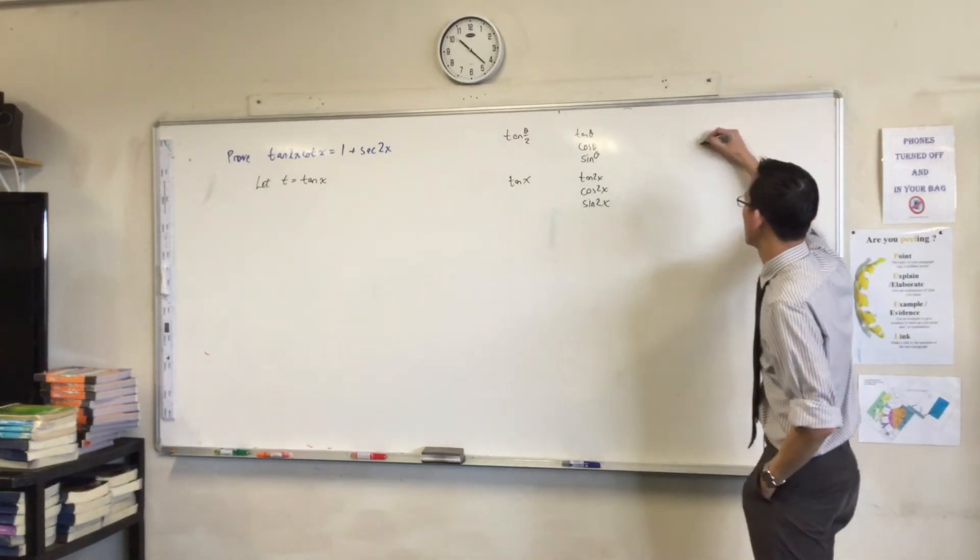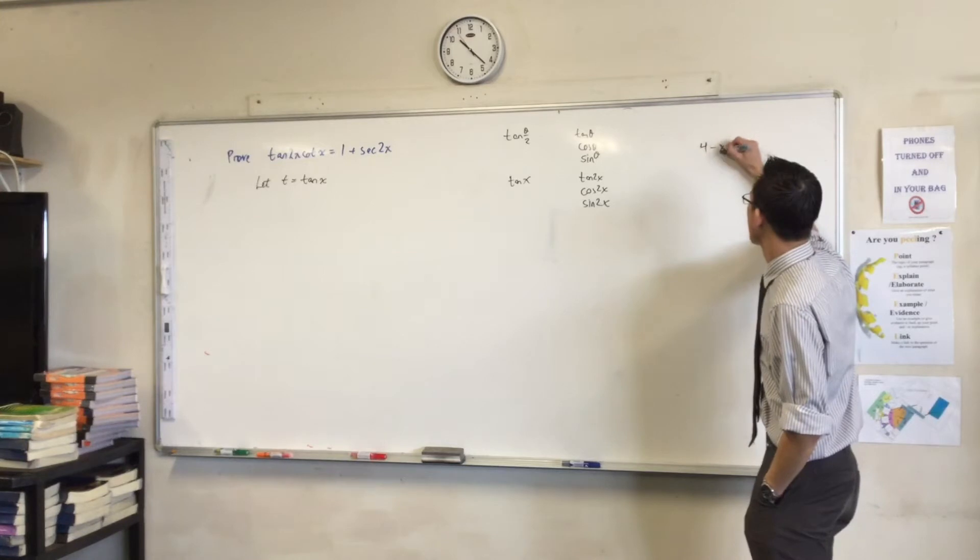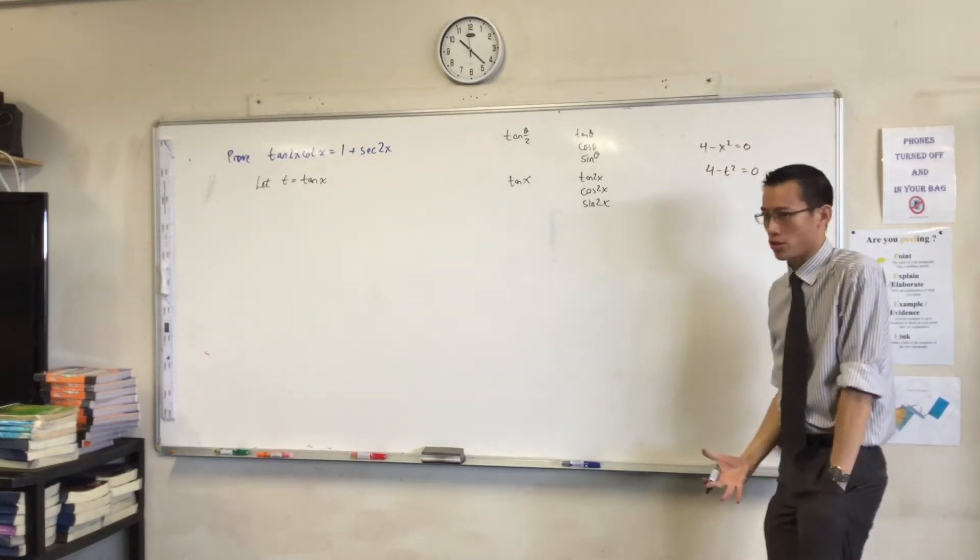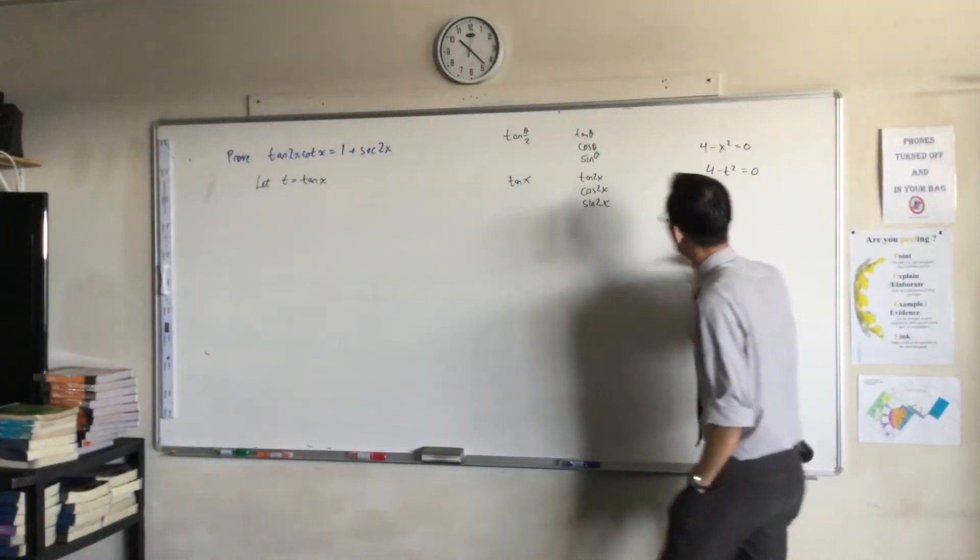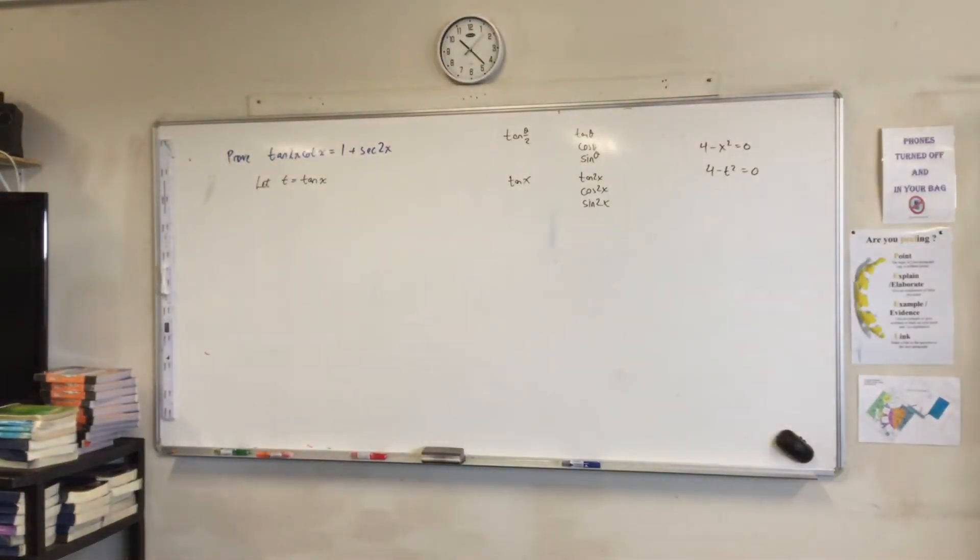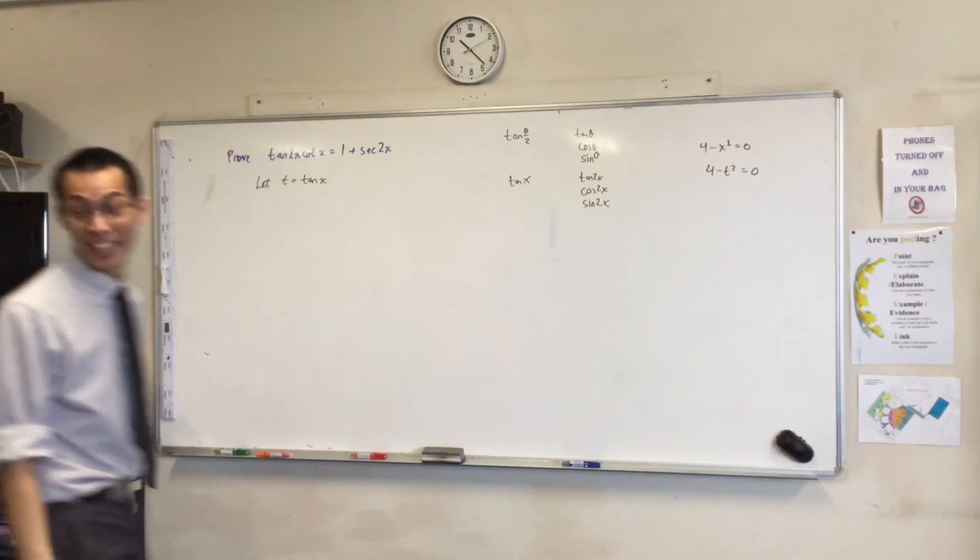It's like the difference between solving a question like 4 minus x squared equals 0 and 4 minus t squared equals 0. It's the same question. You've got to do it exactly the same way, but just the labels are different. So you could technically have infinite, I guess, technically.